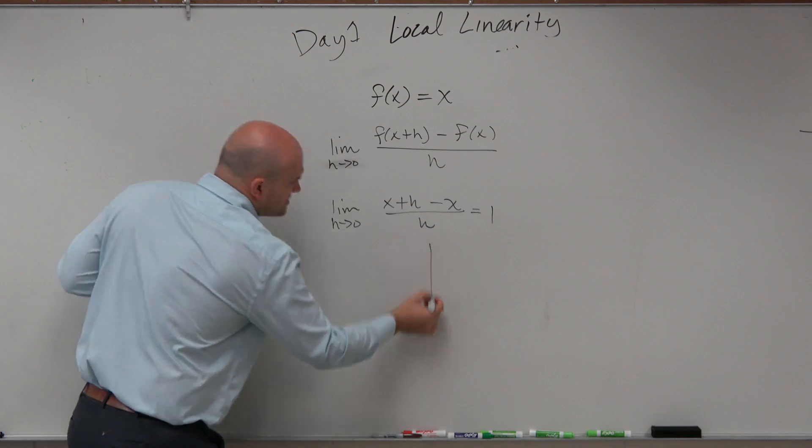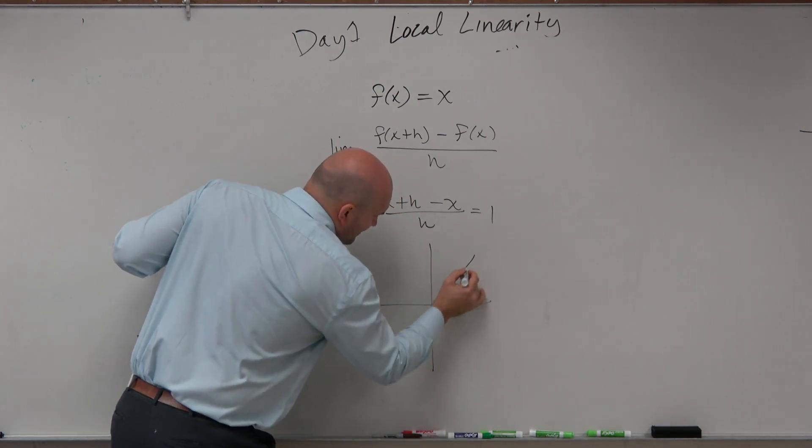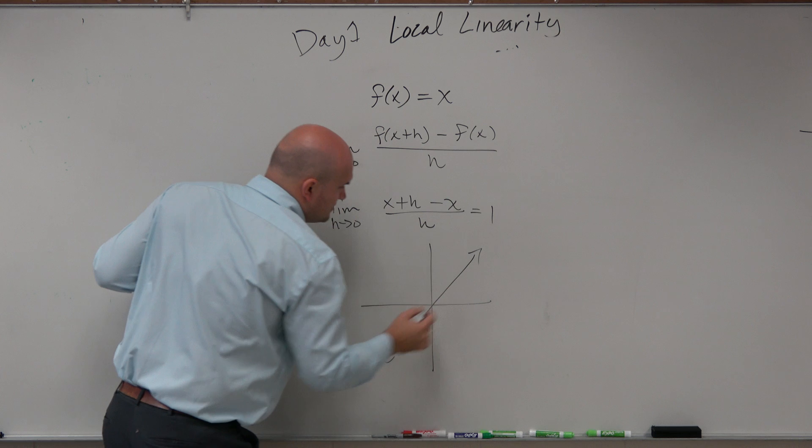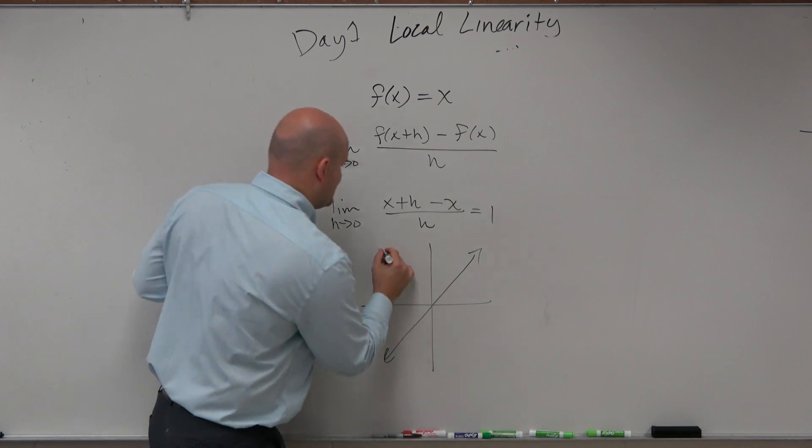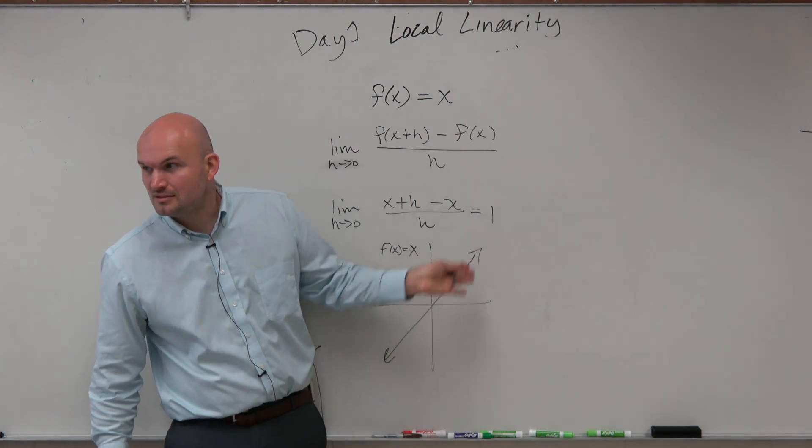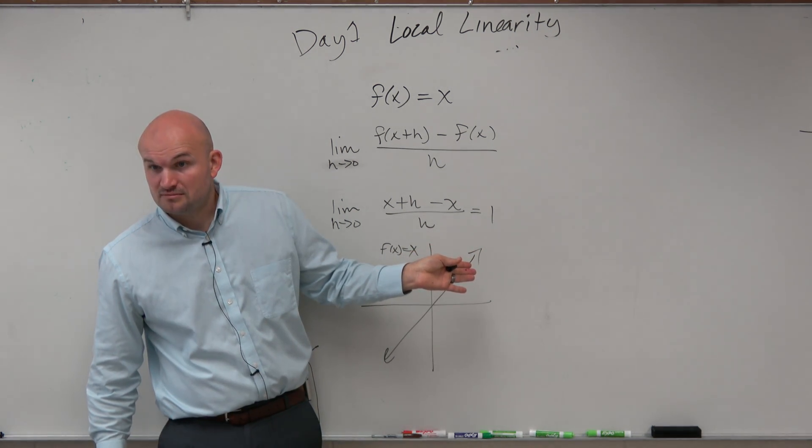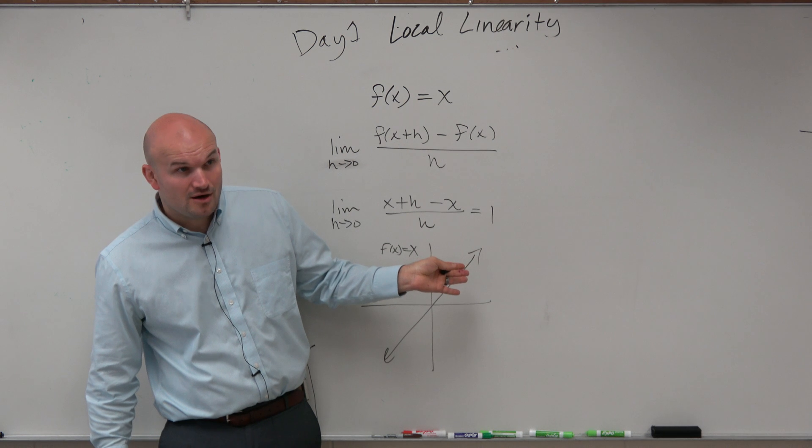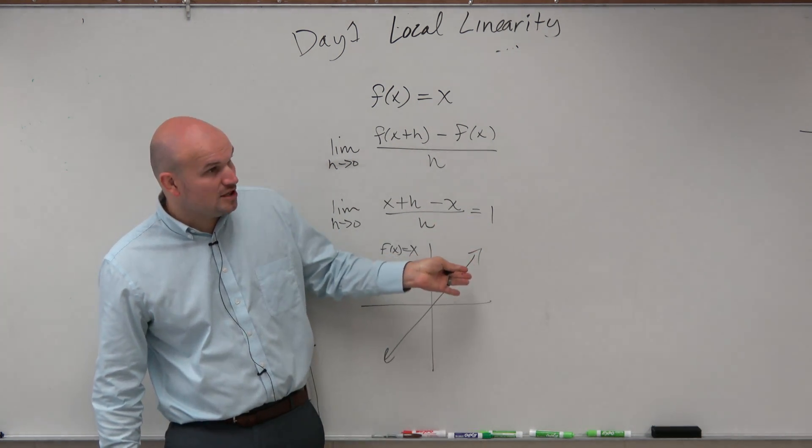If I look at the identity graph, that's what f of x equals x is. Does the slope change at all? Does the slope change? No. Right? It's a constant slope.